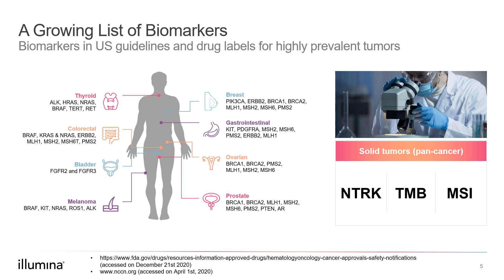A pancancer approach will utilize biomarkers that are unique or overlapping across a multitude of tumor types. When deciding on a panel, it is important to know the tumor type or types you are interested in and the biomarkers associated with them. This will help you determine the best panel to investigate the specific tumor type of interest.